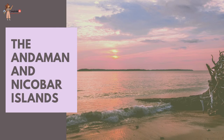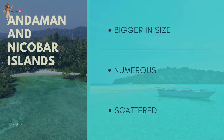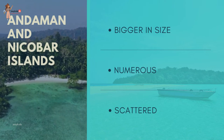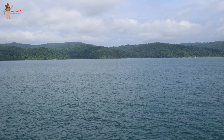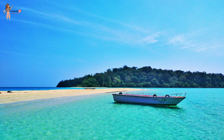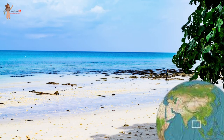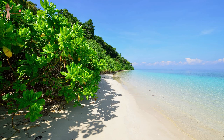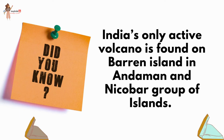The elongated chain of islands located in the Bay of Bengal, extending from north to south, are the Andaman and Nicobar Islands. They are bigger in size and more numerous and scattered. The entire group is divided into two broad categories: the Andaman in the north and the Nicobar Islands in the south. It is believed that these islands are an elevated portion of submarine mountains. These island groups are of great strategic importance for the country, with great diversity of flora and fauna. They lie close to the equator and experience equatorial climate with thick forest cover. India's only active volcano is found on Barren Island in the Andaman and Nicobar group of islands.